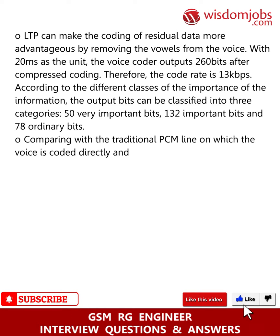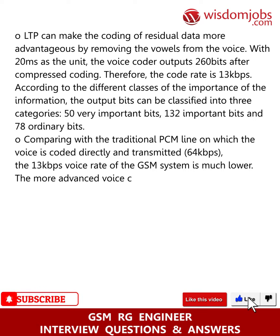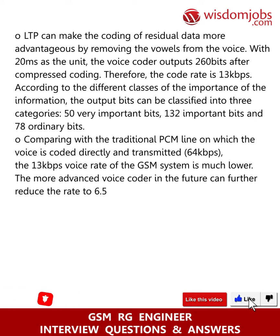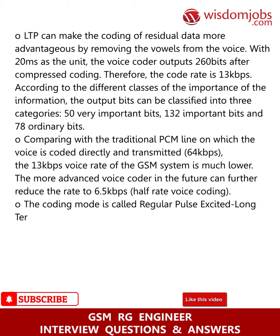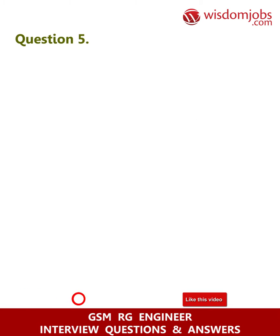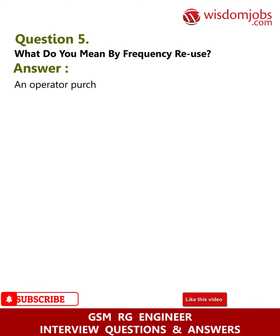According to the different classes of importance, the output bits are classified into three categories: 50 very important bits, 132 important bits, and 78 ordinary bits. Compared with traditional PSTN lines where voice is coded and transmitted at 64 kilobits per second, the 13 kilobits per second rate of GSM is much lower. More advanced voice coders in the future can further reduce the rate to 6.5 kilobits per second — called Regular Pulse Excited Long-Term Prediction (RPE-LTP) half-rate voice coding.